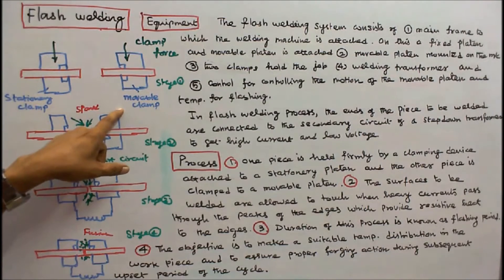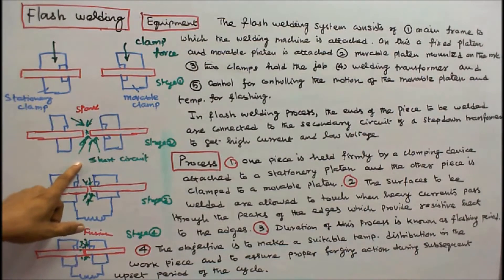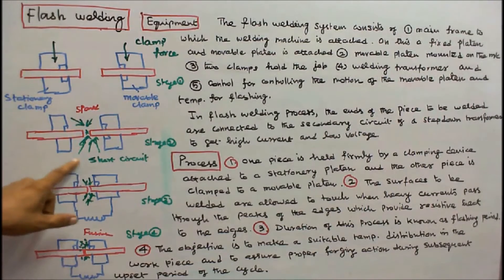2. The surfaces to be welded are allowed to touch when heavy currents are passed through the peaks of the edges which provide resistive heat to the edges. Duration of this process is known as flashing period.